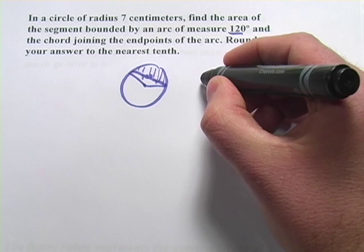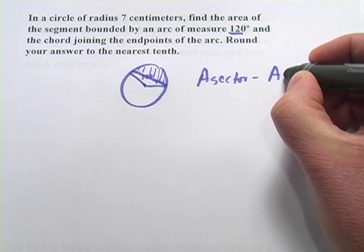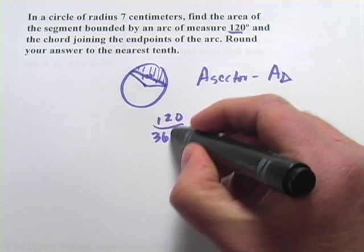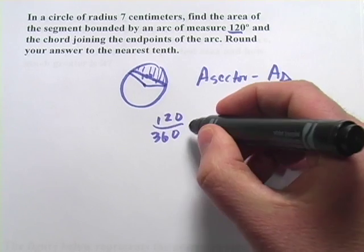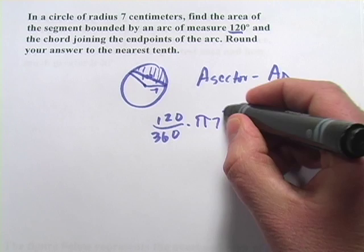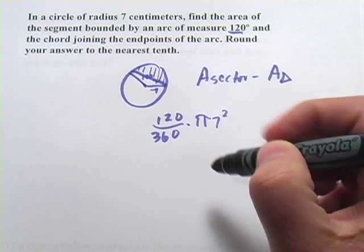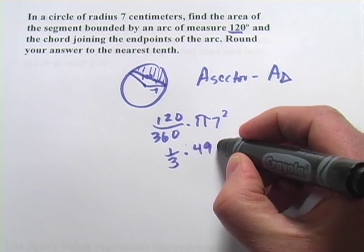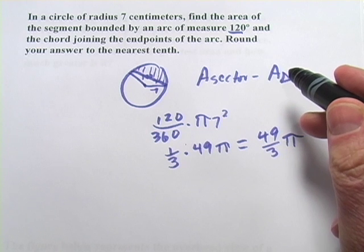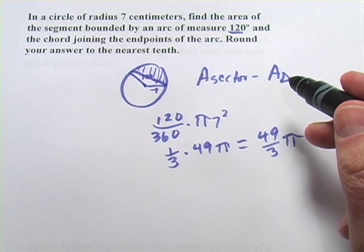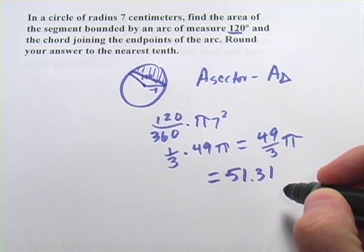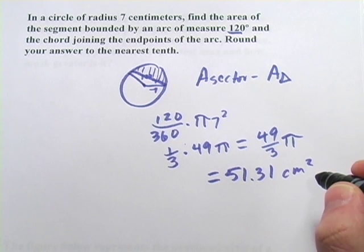To figure out that area, it's the area of the sector minus the area of the triangle. The sector is 120 degrees out of 360 degrees — that's one-third of the circle — multiplied by the area of the circle. Our radius is 7, so it's pi times 7 squared. So we have one-third times 49 pi, which is 49 thirds pi. Punching that into your calculator gives about 51.31 centimeters squared. That's the area of our sector.